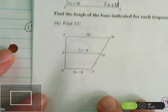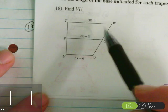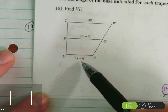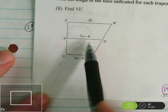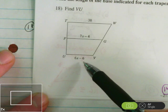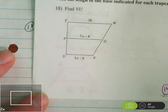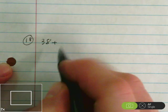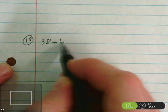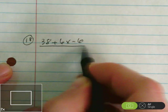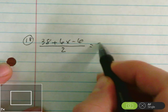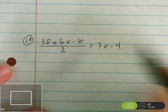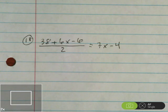Next, number 18, last one. Here, we've got the trapezoid here. The two bases are 38 and 6x minus 6. The median is 7x minus 4. So 38 plus 6x minus 6 divided by 2. The average of these two should be equal to 7x minus 4. Let's write that up. We have 38 plus 6x minus 6 over 2 equals 7x minus 4. Looks like it's now time to start solving.